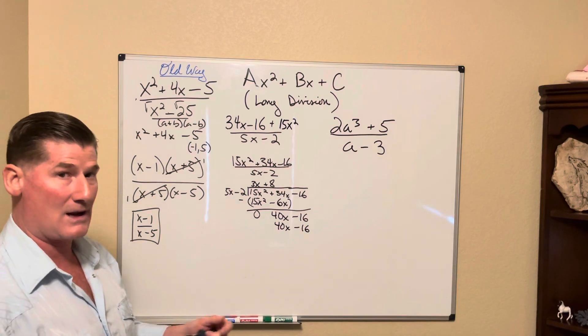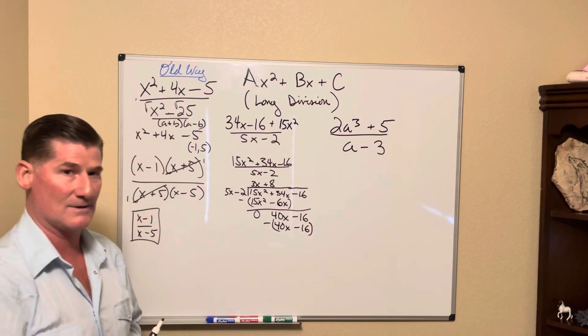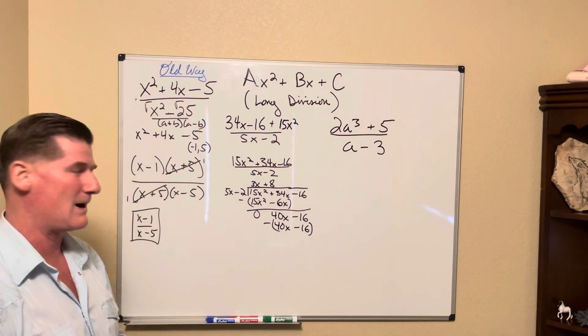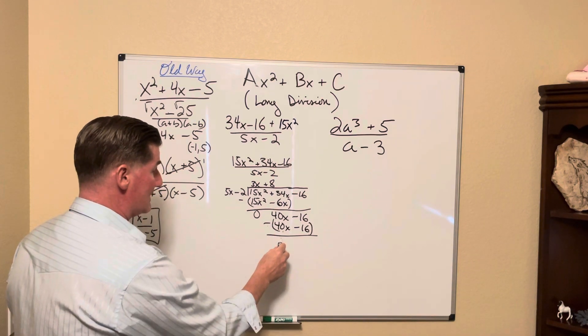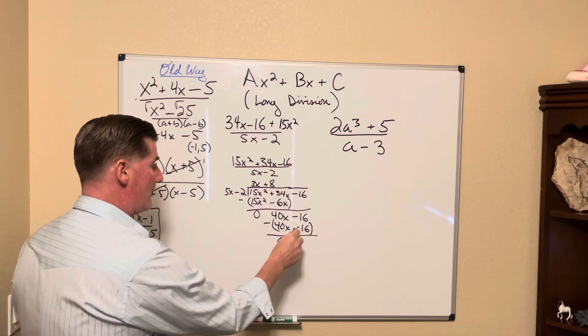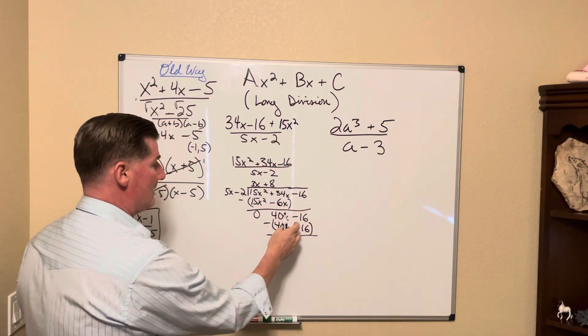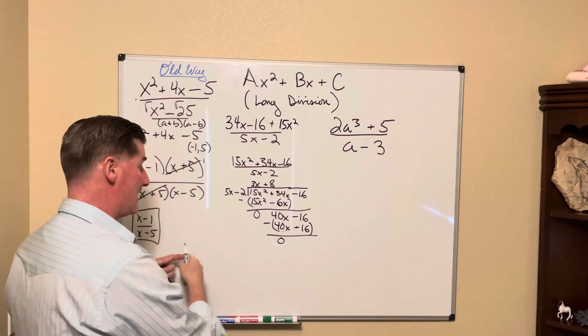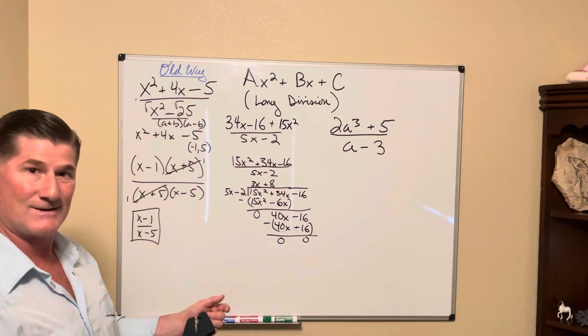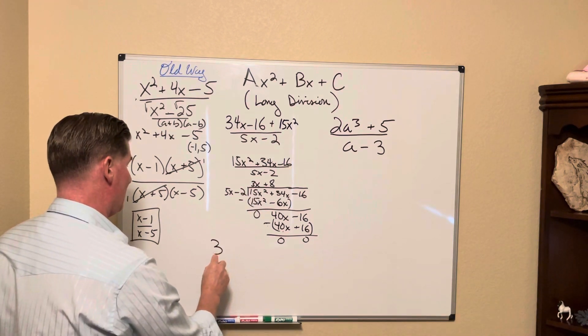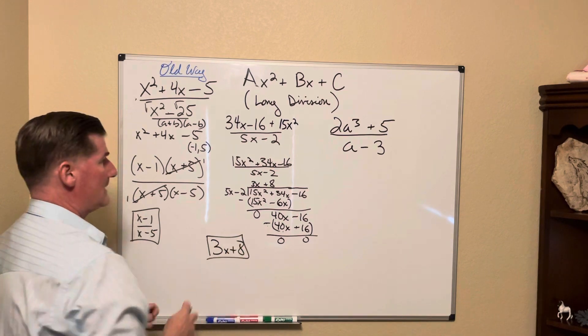Now, again, your book doesn't show it, but what you're really doing is you're subtracting these terms. That's why negative signs and positive signs are important to track. 40x minus 40x is 0. And remember, a negative, a negative makes that positive. So negative 16 plus 16 is going to answer out to 0. So what's the answer? The answer is your quotient, and this came in clean: 3x plus 8. That is the answer.